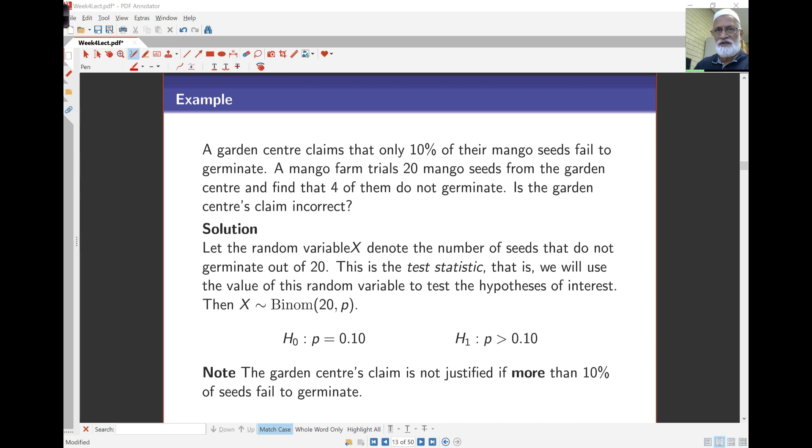Let's look at another hypothesis test for proportion. A garden center claims that only 10% of their mango seeds fail to germinate. A mango farm trials 20 mango seeds from this garden center and finds that four of them do not germinate.